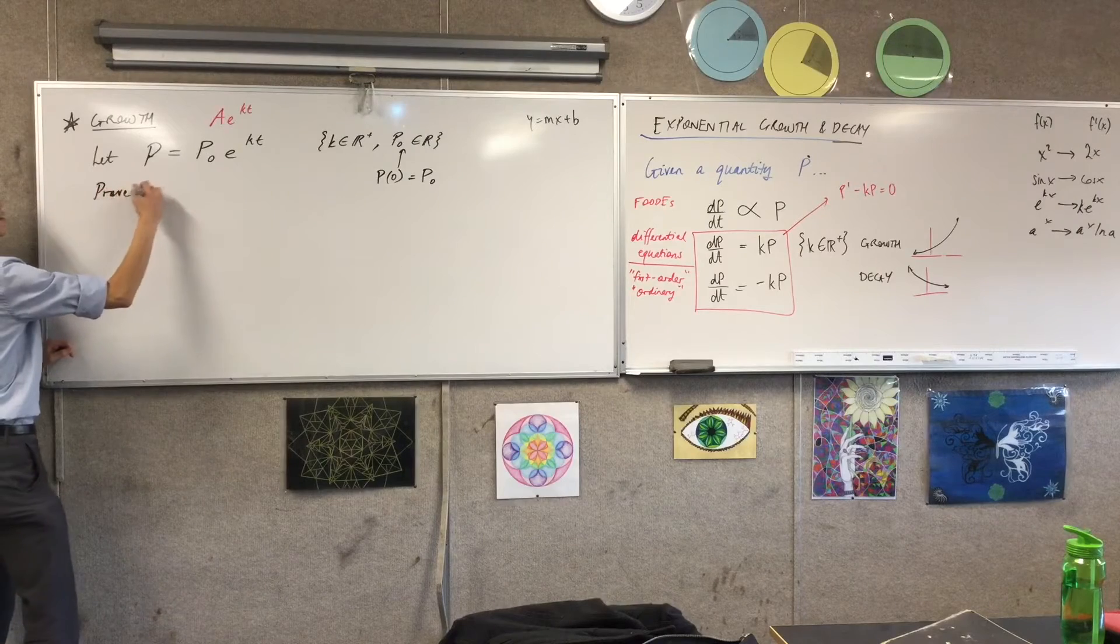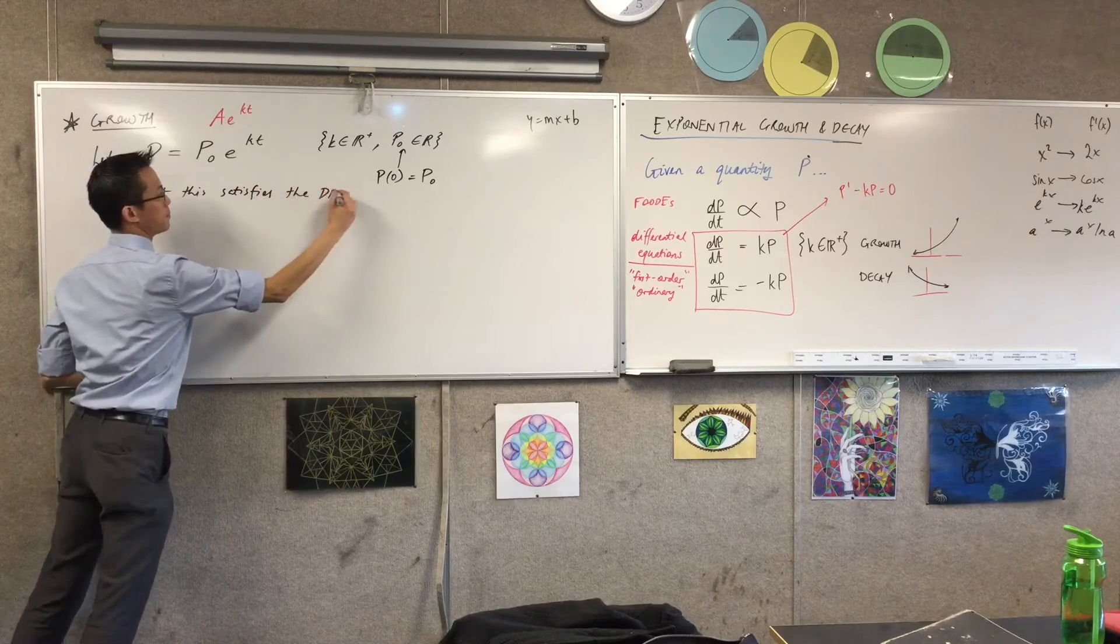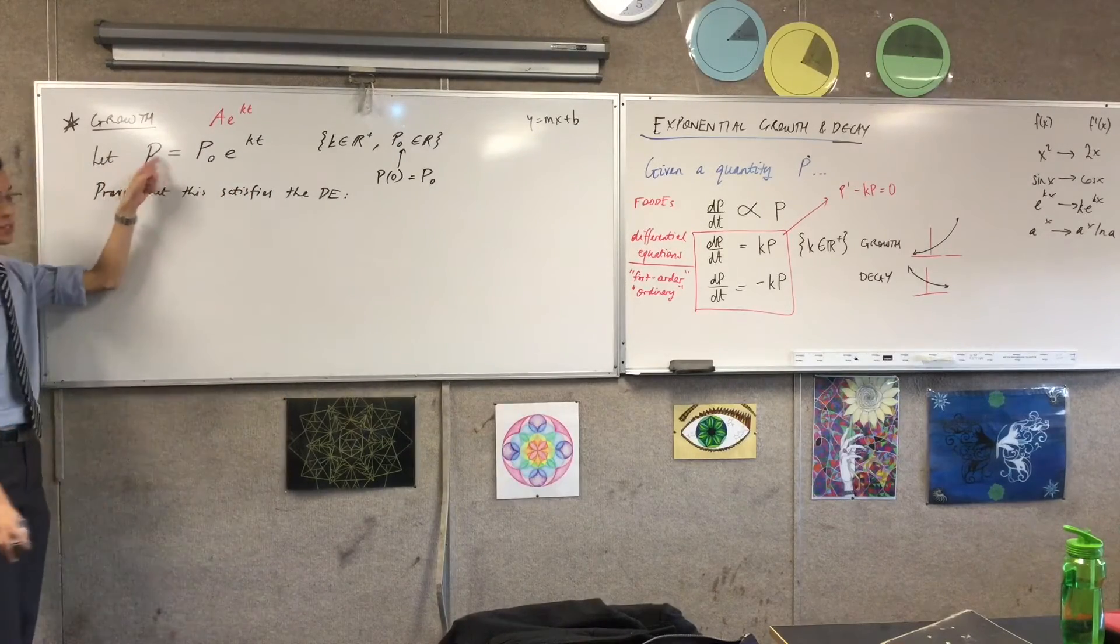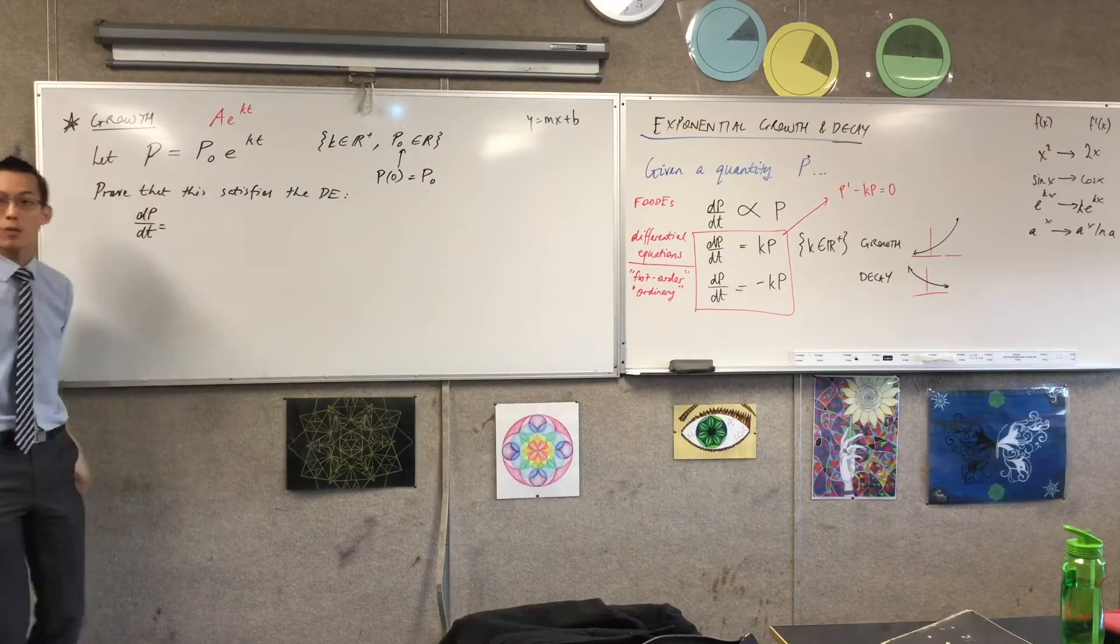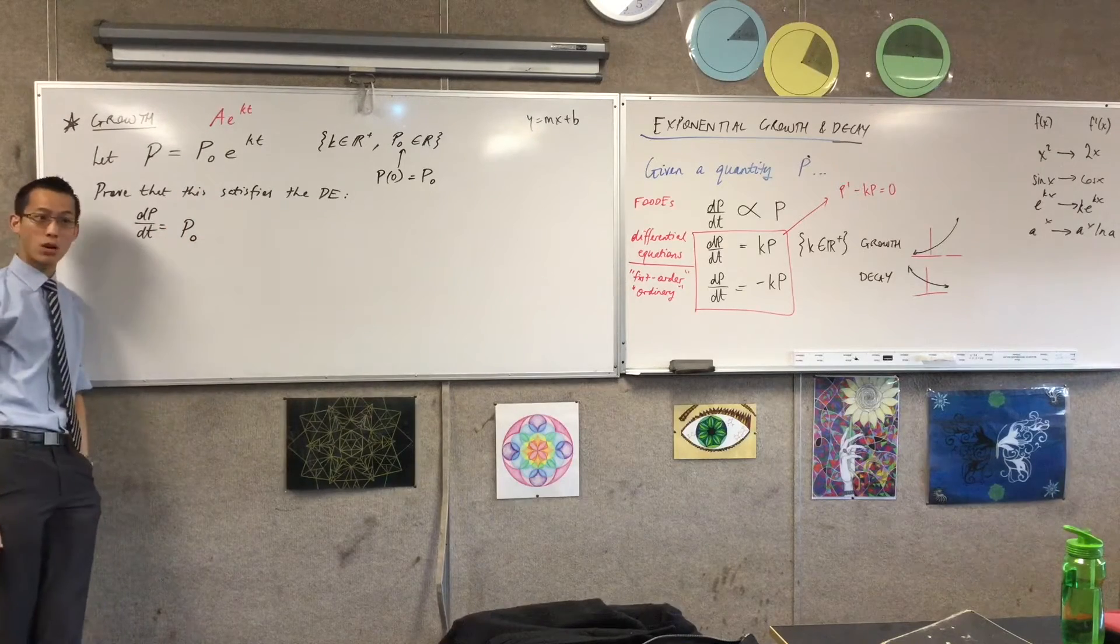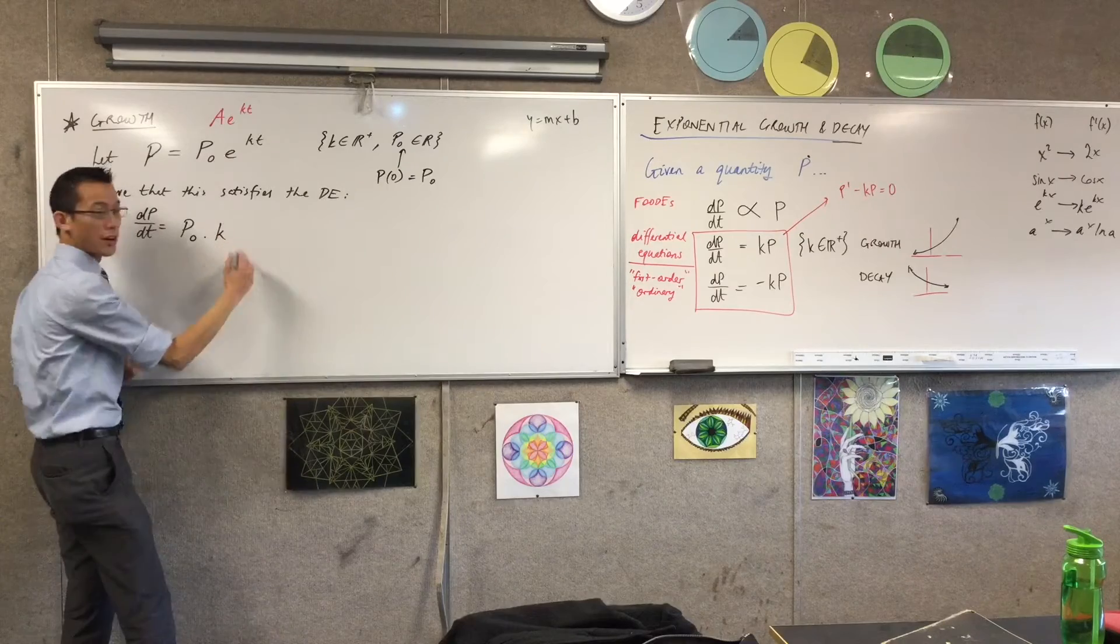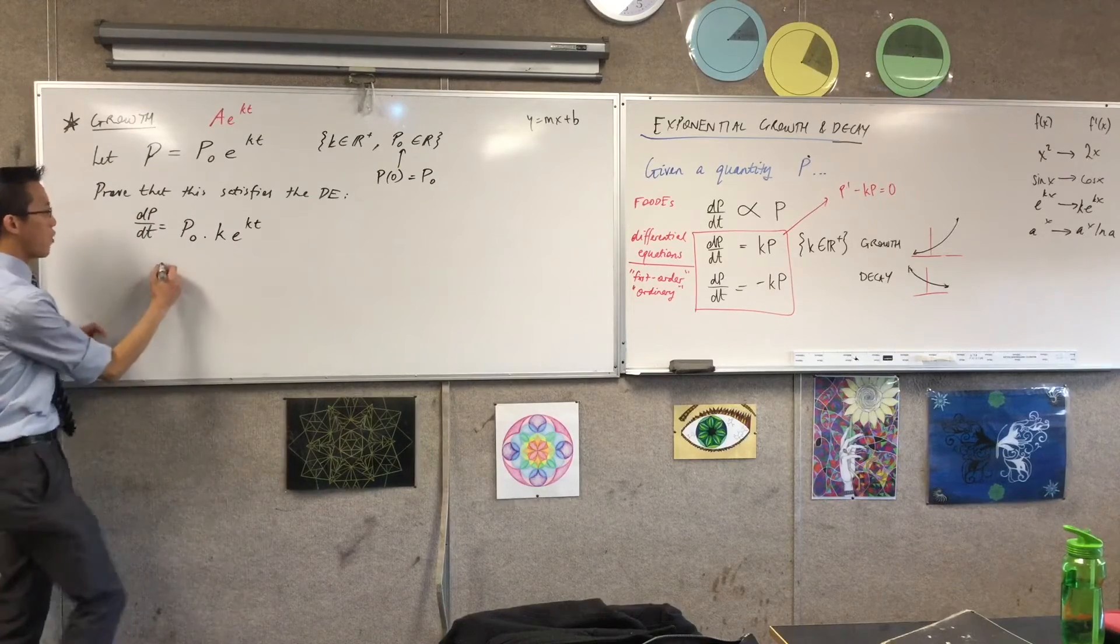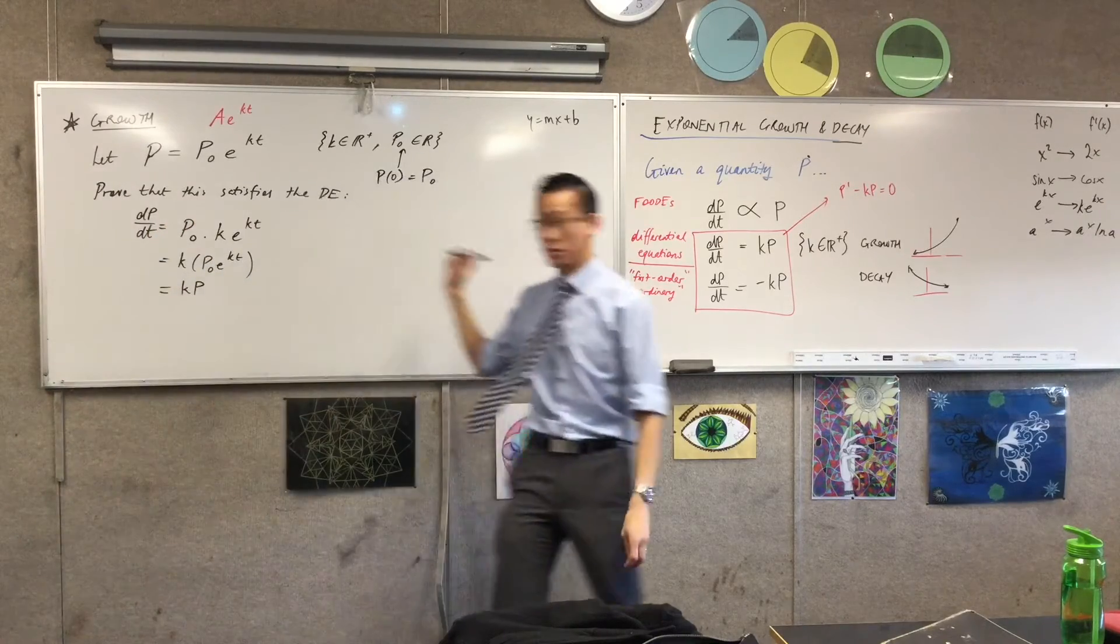To prove that this satisfies the differential equation, all I need to do is start from this. And this tells me, well, if you differentiate, you ought to get something at the other end. So all I'm going to do is take this expression and differentiate it. So I'll take P and differentiate with respect to time. P naught is just a constant, so I'm going to leave that constant coefficient out the front. What happens when I'm differentiating E to the KT? I'm going to have the derivative of the inside and the derivative of the outside. E to whatever just gives you E to whatever. All I need to do is slightly rearrange this. And you can see, ta-da! I have that result that I was trying to show.